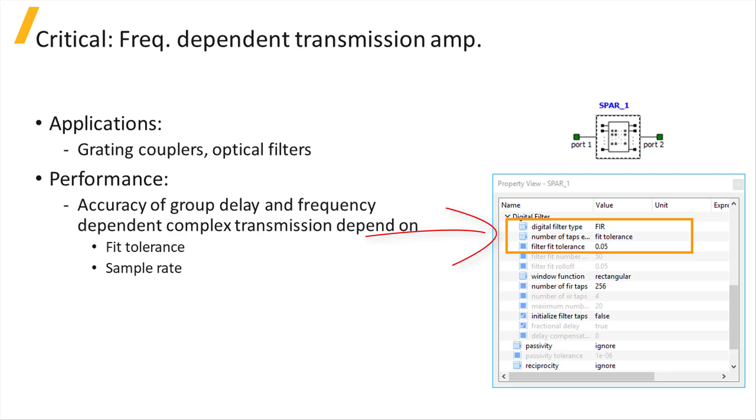Set the digital filter type to FIR and the number of taps estimation to fit tolerance. When the S-parameter element is implemented with these settings, the accuracy of the group delay and frequency-dependent transmission depend on the fit tolerance, which is the digital filter property highlighted here, and the sample rate.